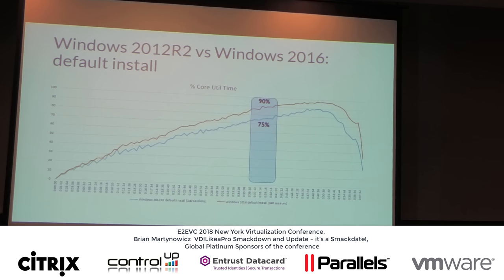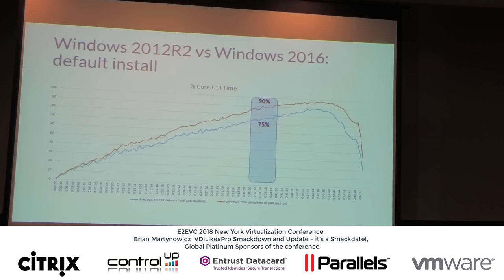The reason behind that: if we're running a VSI test and capturing data such as percentage of core utilization, disk latency, memory available, and so on, we can directly correlate that with the results we're monitoring from within the user session. It becomes very apparent that the difference between the operating systems is primarily due to CPU utilization — which is also 15%, oddly enough.